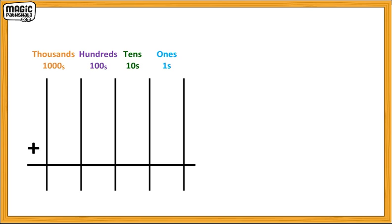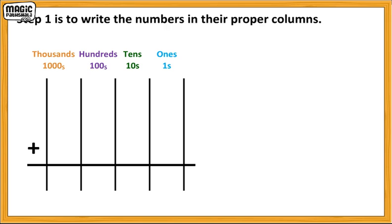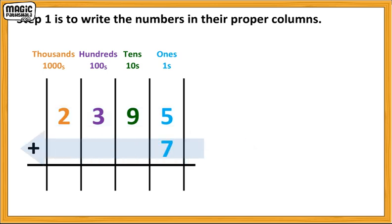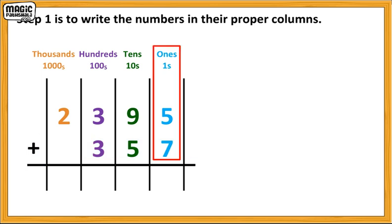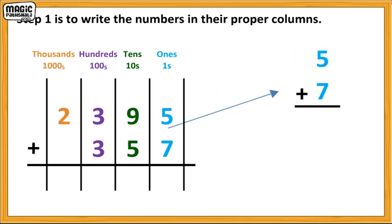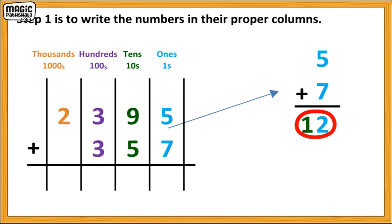We use the same steps as before. Step one is to write the numbers in their proper columns. Starting from the right, we have five in the ones, nine in the tens, three in the hundreds, and two in the thousands column. Then we have seven in the ones, five in the tens, and three in the hundreds column. Now, let's add. We start in the ones column and add five plus seven. Five plus seven is equal to twelve, which means two ones and one ten.